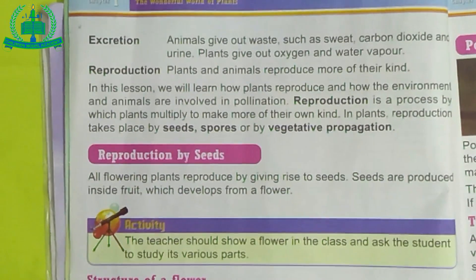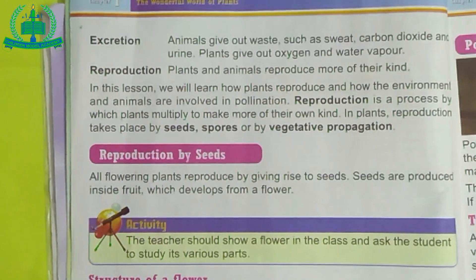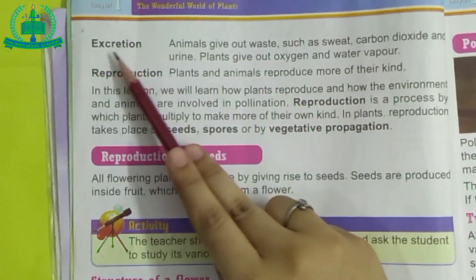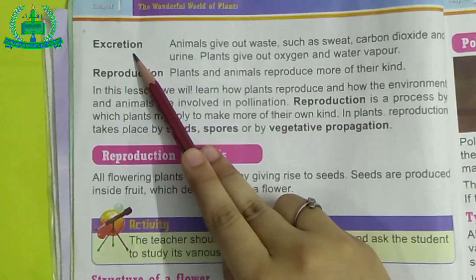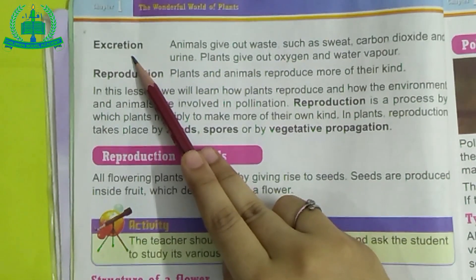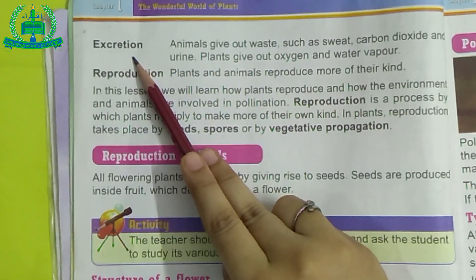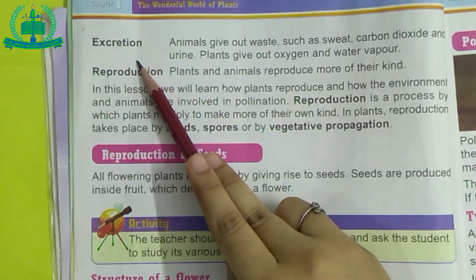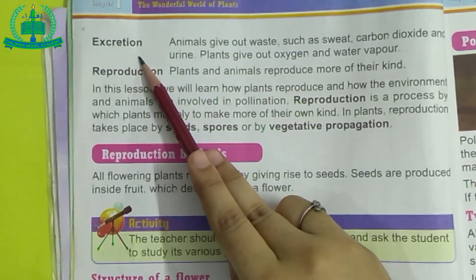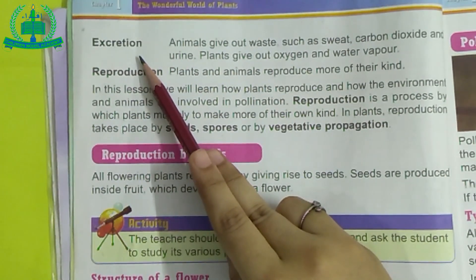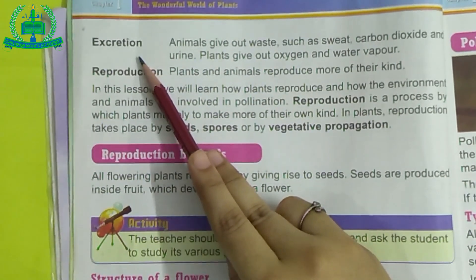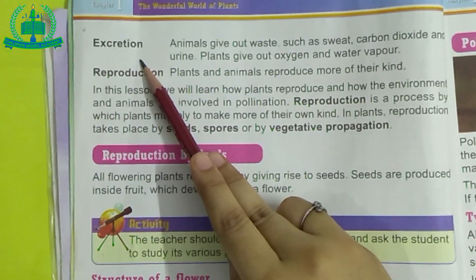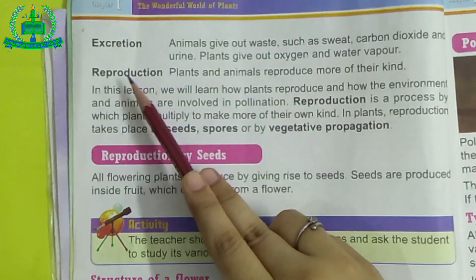Now see page number two: the heading is Excretion. What is excretion? All living things have an excretion process in which they remove waste materials from their body. In plants, they give out oxygen and water vapor.